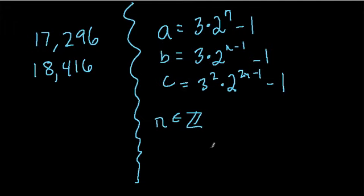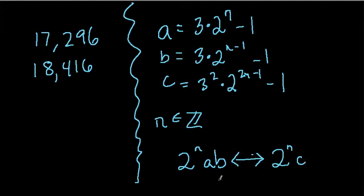And if you want to keep going here, 2^n times A times B and 2^n times C will be friendly to each other. Now that's a lot of steps, but basically pick a number n, and it could be equal to 2 or something greater. Plug it in here, and you'll get two friendly numbers. Let's try it and see what we get, just for fun.